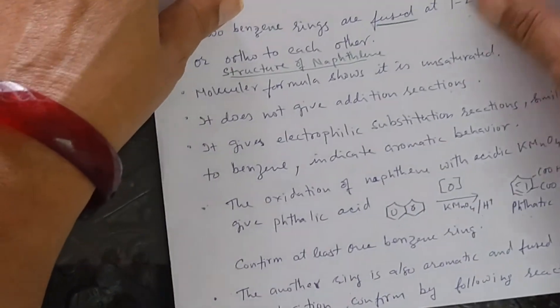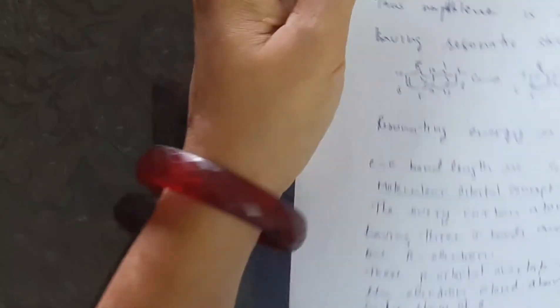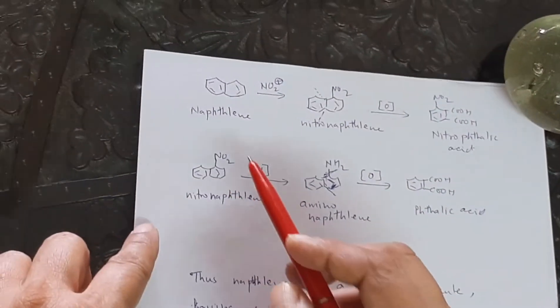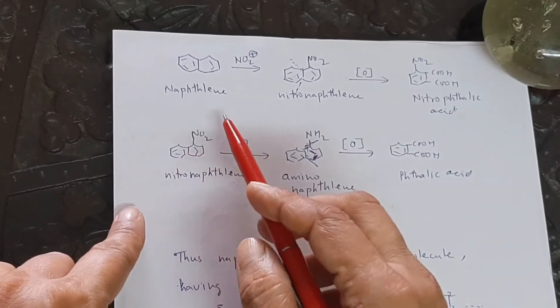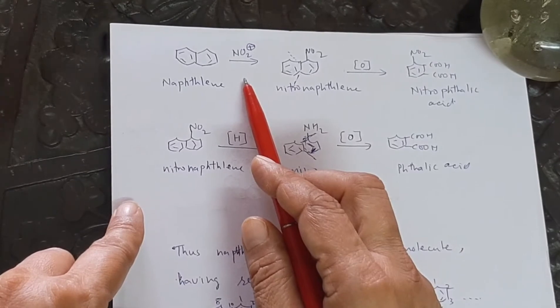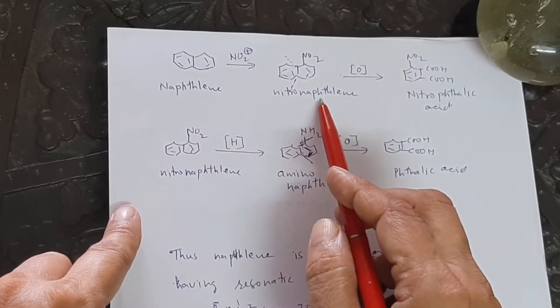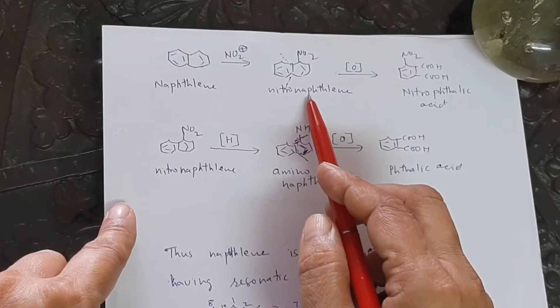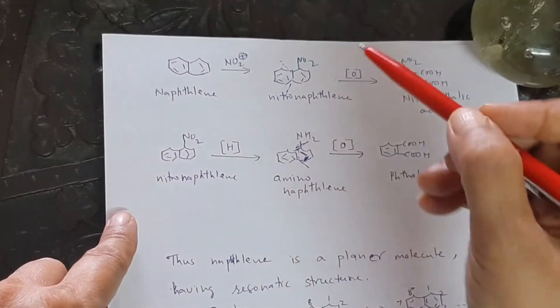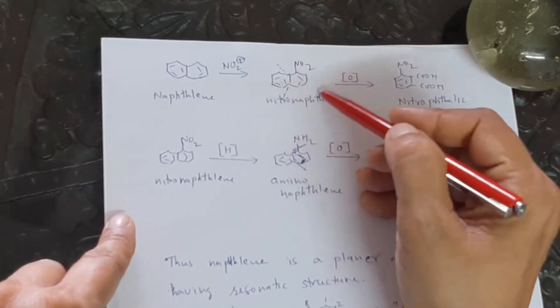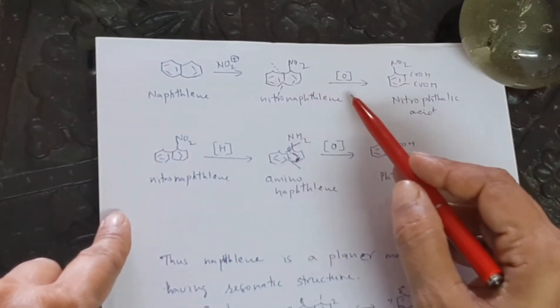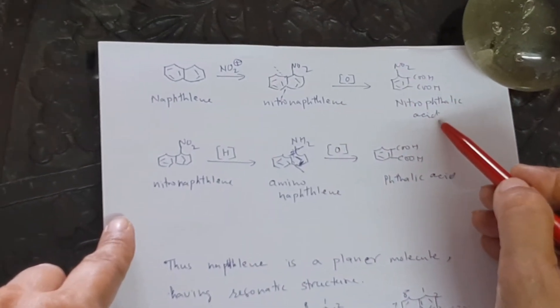The second ring is also aromatic or not. For this, we study this reaction. In this, naphthalene is nitrated. It gives nitronaphthalene. This nitronaphthalene, if oxidized, then we know that the nitro group deactivates the ring. So if we oxidize, then we get the nitrophthalic acid.